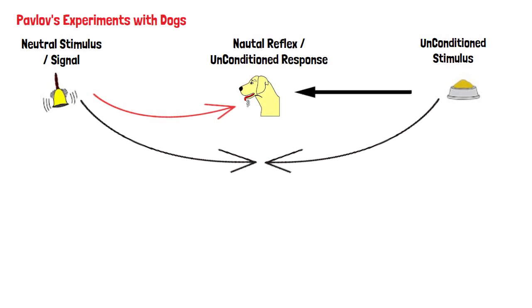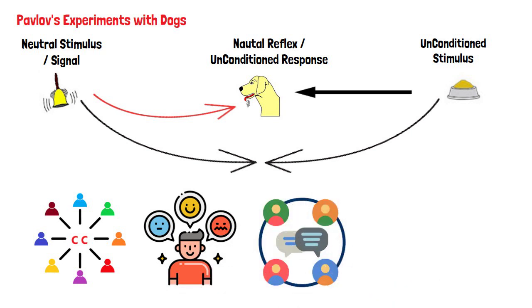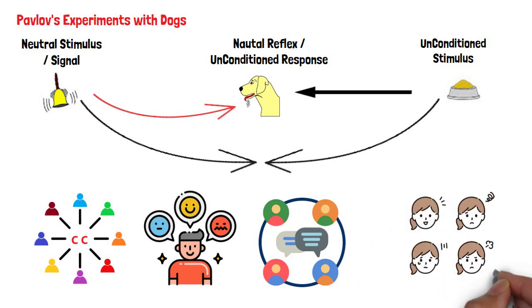Although classical conditioning was not discovered by a psychologist, it has had a tremendous influence over the school of thought in psychology known as behaviorism. Behaviorism assumes that all learning occurs through interactions with the environment and that environment shapes behavior.